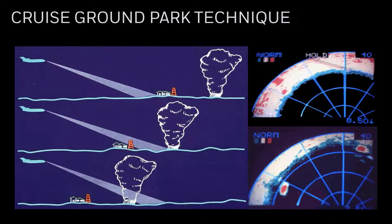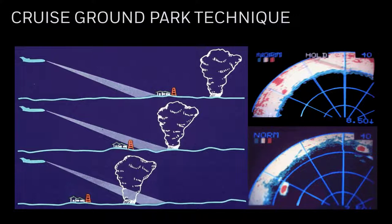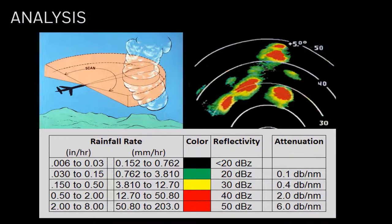This technique has two main benefits: storm cells are easily identified because they walk out of the ground returns, and if there isn't a radar shadow behind the cell, we know the signal hasn't been attenuated. This technique detects all cells, but analysis is still required to make a deviation decision. Radar does not directly measure rainfall rate — it measures how much transmitted energy is reflected back, and that amount is proportional to rainfall rate, represented by different colors on the display.